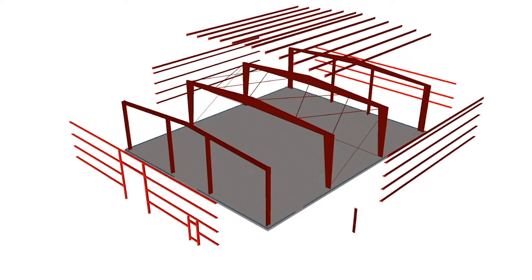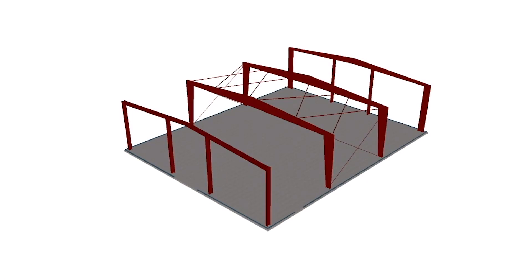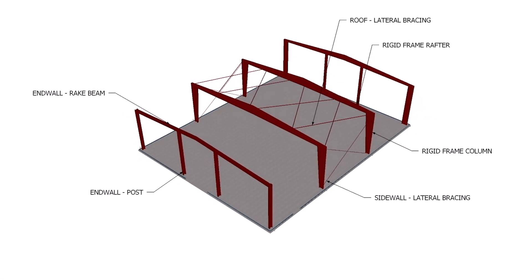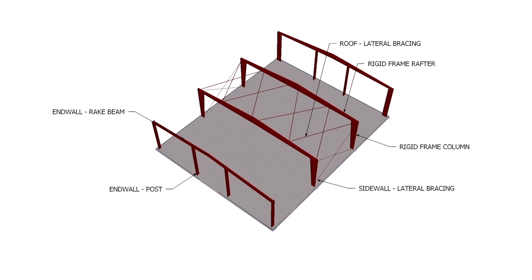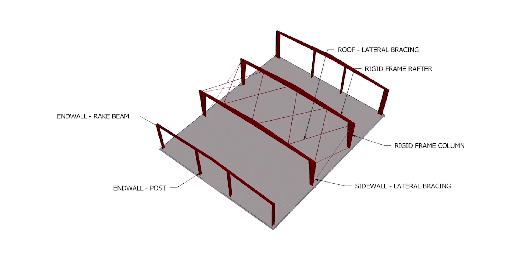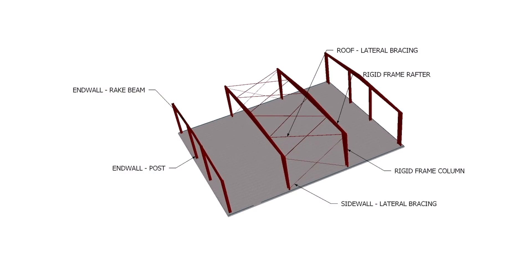Finally, let's look at the primary framing. End wall primary framing is typically post and beam construction. The end wall posts or columns are shown along with the end wall rake beam. Interior primary frames are rigid moment frames. The rigid frame columns and rafters are identified.